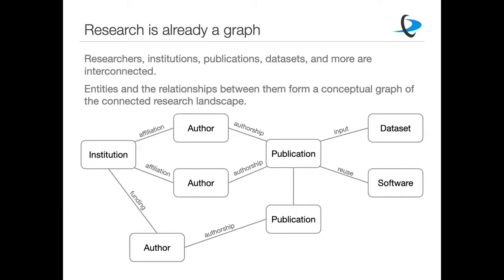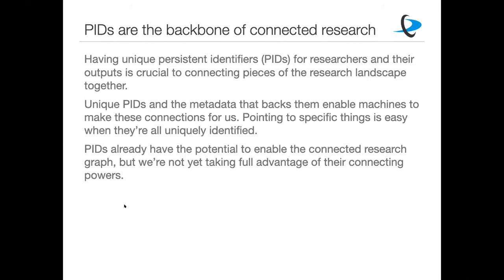What we want to do through FREA and through persistent identifiers is to make that conceptual graph into something that's more actually traversable by humans and machines. We consider PIDs to be the backbone of connected research. Having unique persistent identifiers for researchers and their outputs is crucial to connecting pieces of the research landscape together. Unique PIDs — and especially the metadata that backs them — is what helps enable machines to make these connections for us. It's much easier to point to specific things when they're all uniquely identified. By having standardized metadata and unique IDs within the metadata, it makes it a lot easier for us to all point to each other's stuff.